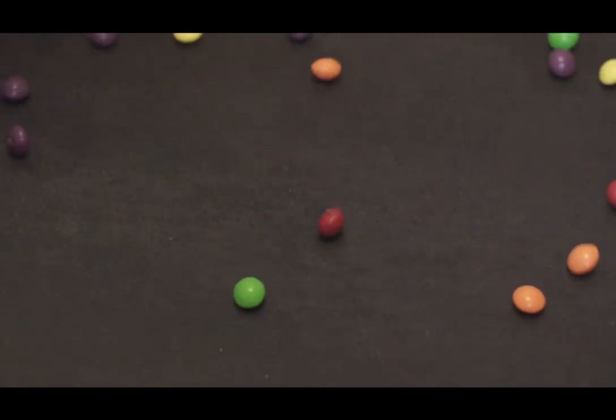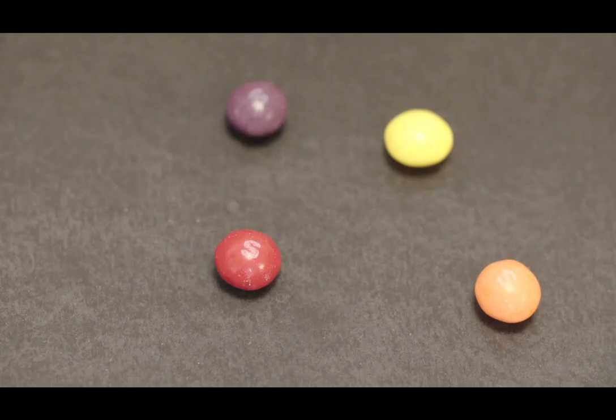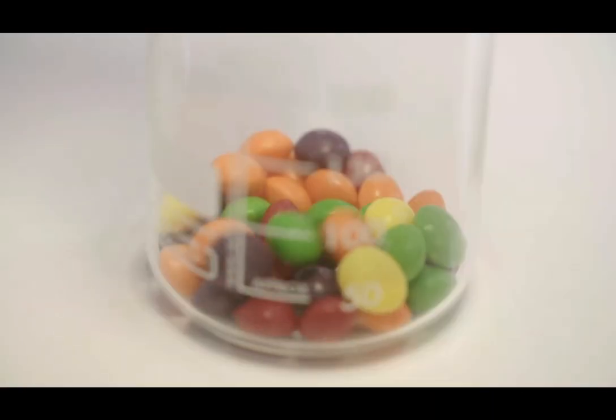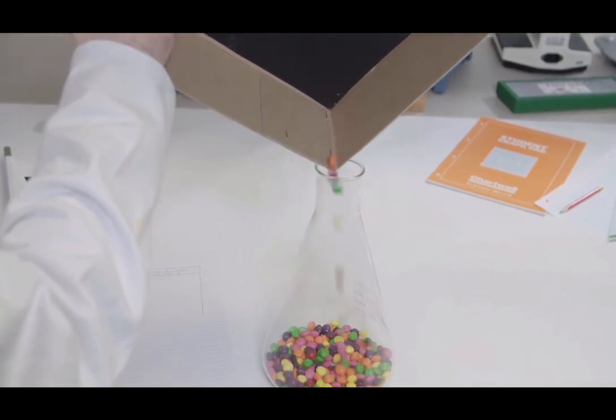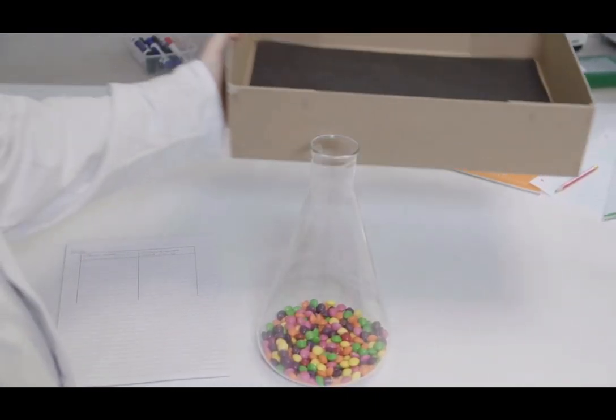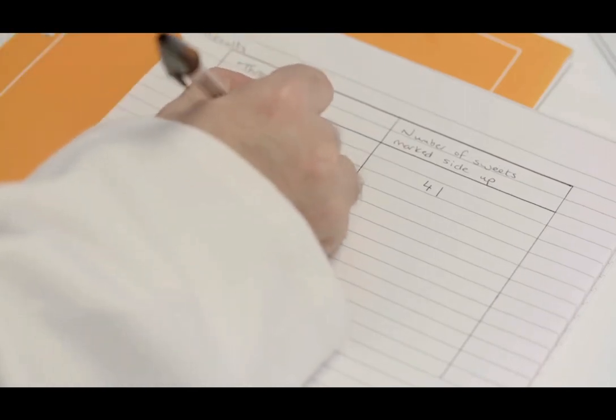As before, the sweets that landed marking side up are removed. They are put back into the beaker and counted. The remaining sweets are put aside as before. The results are recorded as previously.